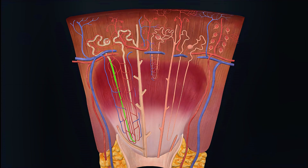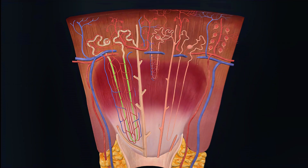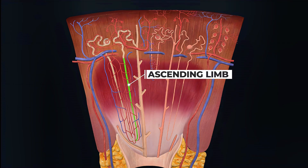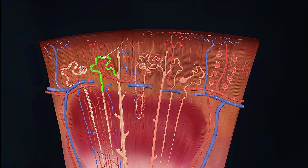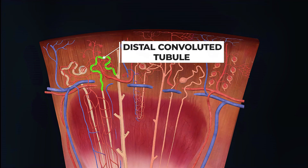The part of the loop of Henle going downwards is called the descending limb, and the part going upwards is called the ascending limb. Next, the third part of the renal tubule starts. This part is again in the cortex region and is called the distal convoluted tubule, or DCT.